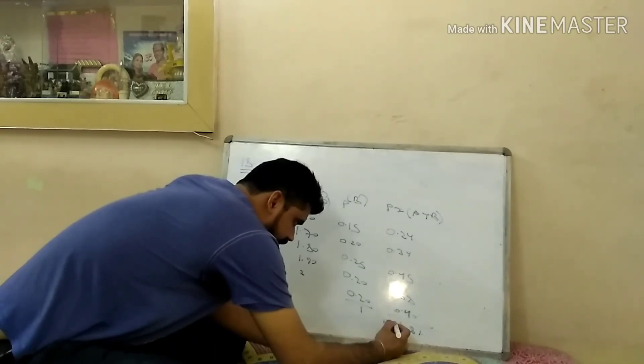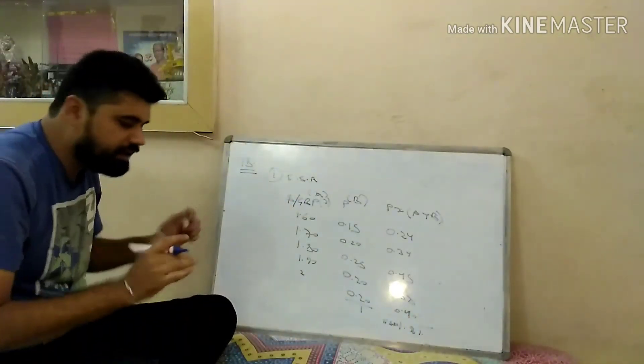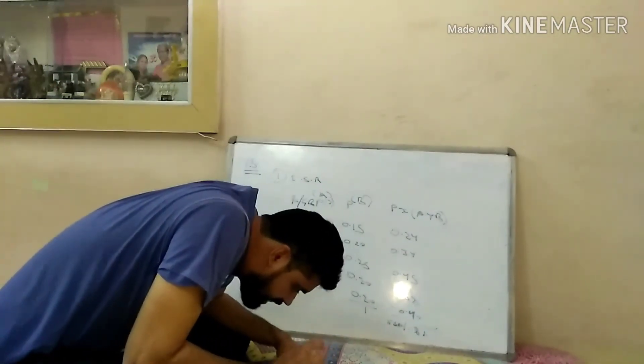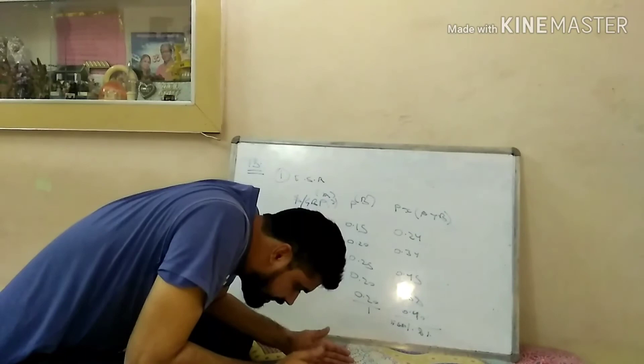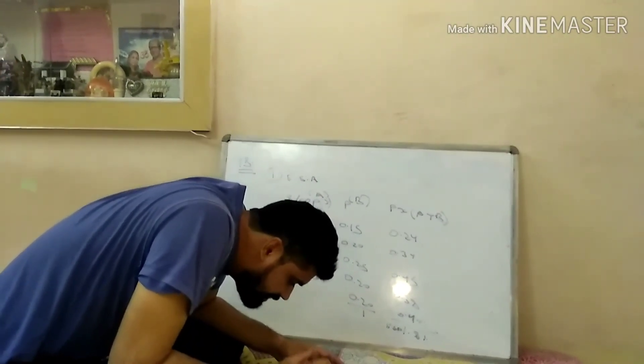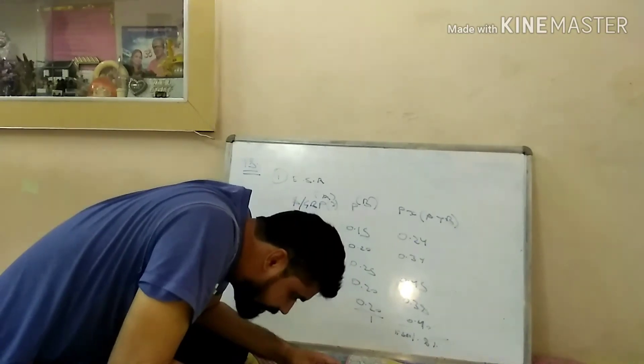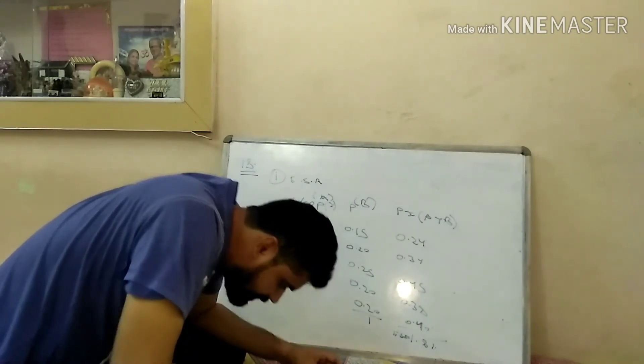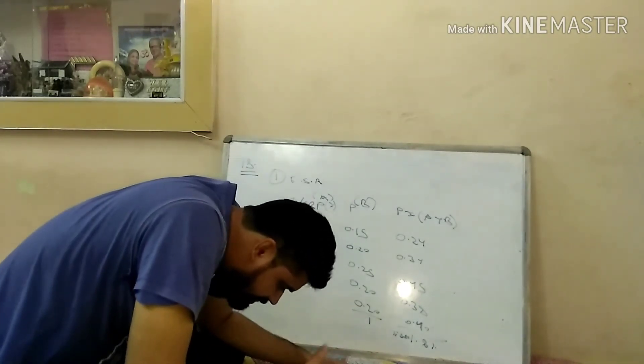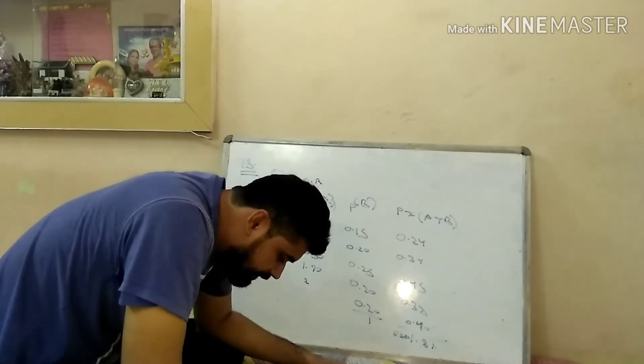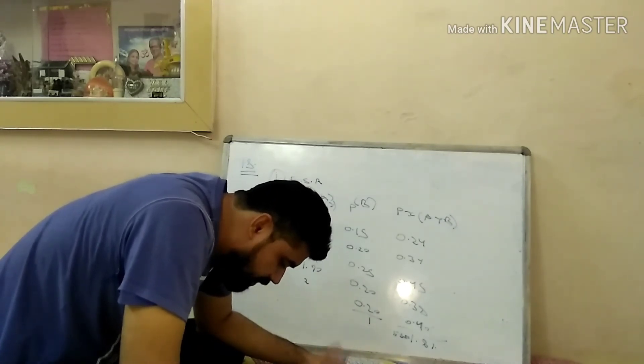The second point is, if as of March 2009 the 6 month forward rate is $1.80, should the firm sell forward its pounds receivable due in September 2009? If the 6 month forward rate is $1.80, the expected profit of the firm can be maximized by retaining its pound receivable.